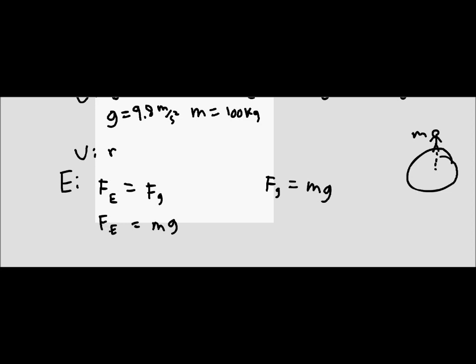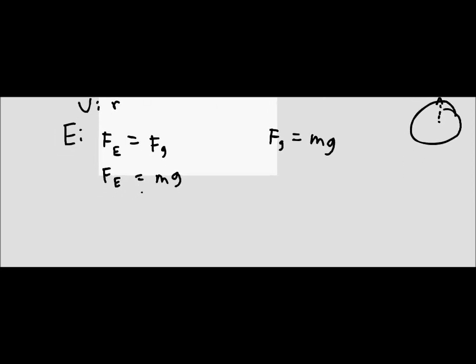Now to replace the electrostatic force, we have the equation which is the electrostatic force is equal to K Q1 Q2, and those are Q's not 9's, over r squared. Well in this case, since the Q's are the same, we can write that as K Q squared over r squared, because Q times Q and it's the same Q, is equal to mg.